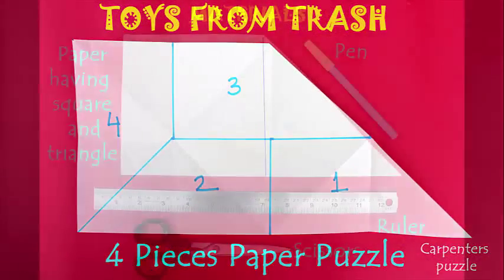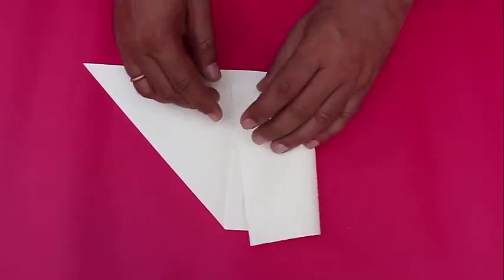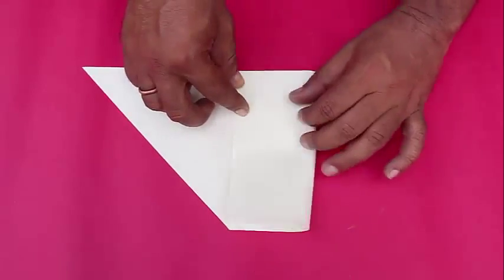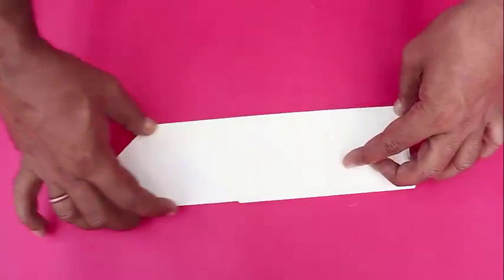To do this carpenter's puzzle of dividing a trapezium in four equal parts, we will first take this square and divide it in four equal parts, and we will follow the same process and divide the triangle also in four equal parts.